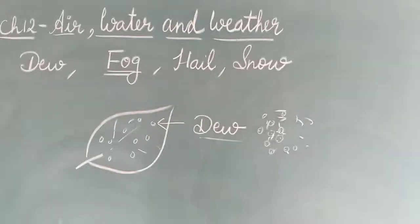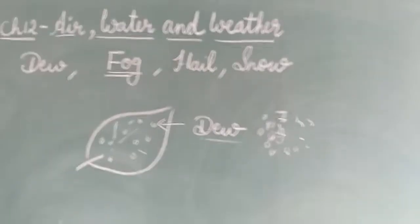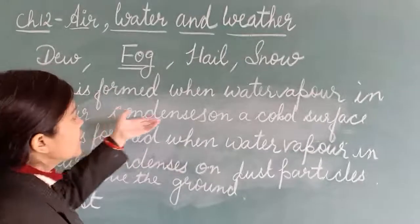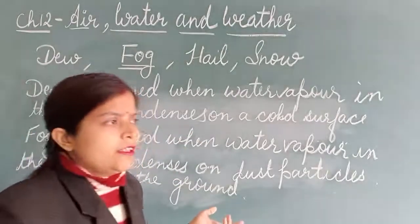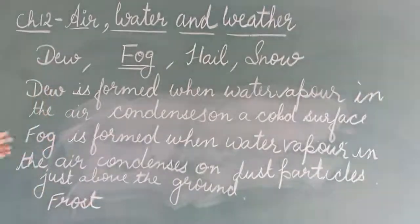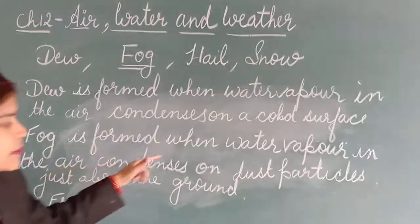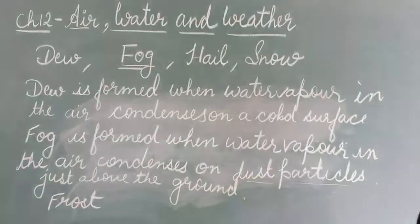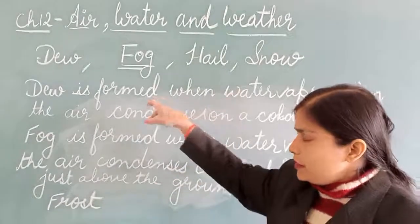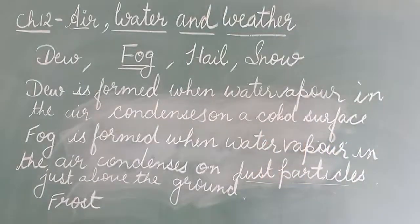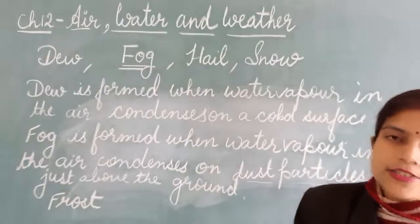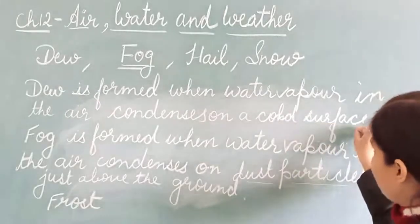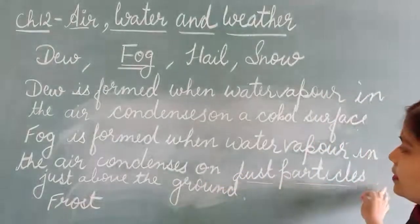Next we are going to learn about hail. Let's review: dew is formed when water vapor in the air condenses on a cold surface — like glass, grass, anywhere. Fog is formed when water vapor in the air condenses on a dust particle just above the ground. So in both dew and fog, you can see that water vapor is condensing. In dew, it condenses on a cold surface, and in fog, it condenses on a dust particle.